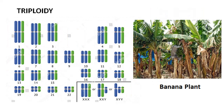Another case of non-disjunction involves a total lack of separation of homologous chromosomes. When this happens, a gamete inherits a complete diploid set of chromosomes. When a gamete with an extra set of chromosomes is fertilized by a normal haploid gamete, offspring have three sets of chromosomes and are called triploid. This condition is rare in animals but frequently occurs in plants, and often the flowers and fruits of these plants are increased in size.